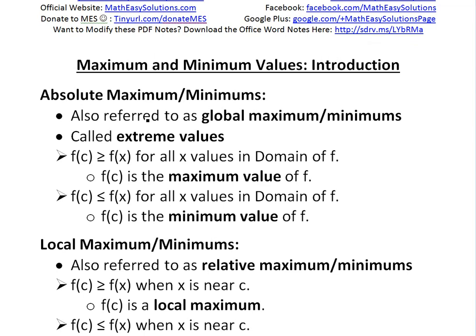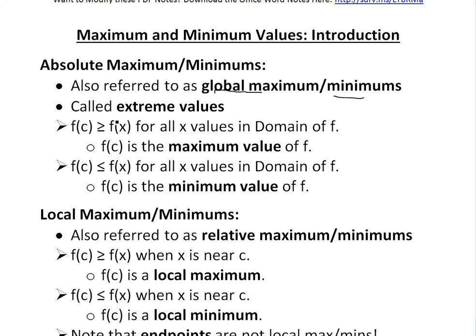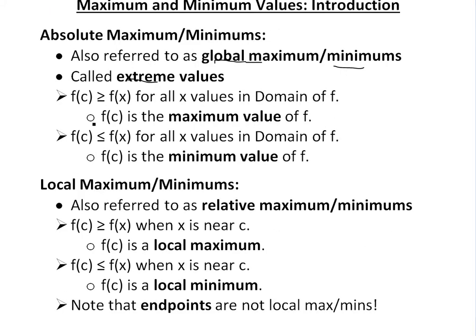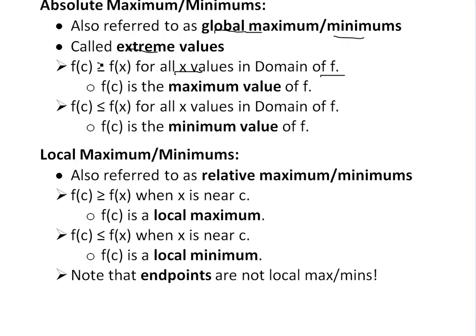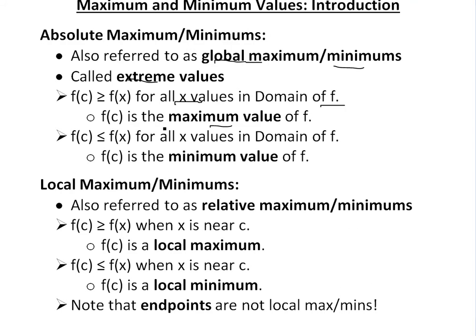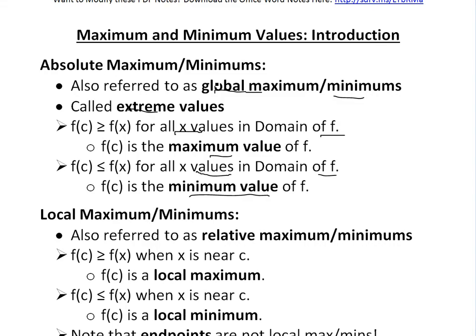An absolute maximum is also referred to as a global maximum or minimum, and they're also called extreme values. Basically the definition is: if you have f(c), where c is any random x value inside the domain, and f(c) is greater than f(x) for all x values in the domain of f, then it's called the maximum value, or absolute maximum, or global maximum. Similarly, if f(c) is less than or equal to f(x) for all x values in the domain of f, then f(c) is the minimum value, or the absolute minimum, or the global minimum.